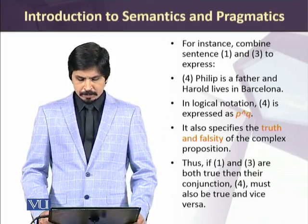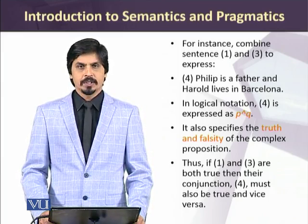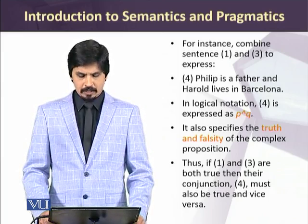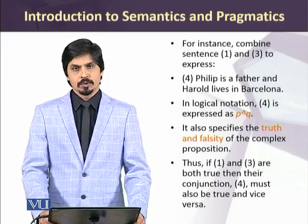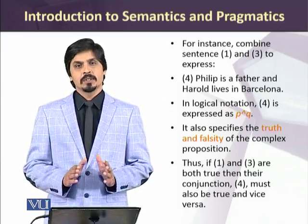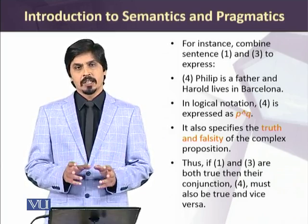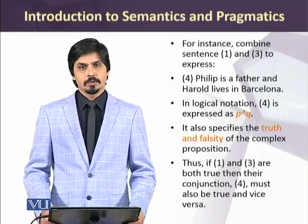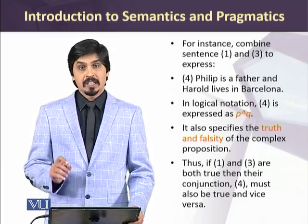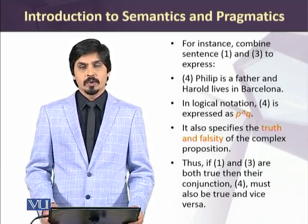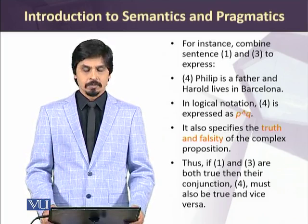For instance, if we combine sentences one and three to express 'Philip is a father and Harold lives in Barcelona,' in logical notation we would write it P and Q. It also specifies the truth and falsity of the complex proposition. Thus, if statements one and three are true, then their logical conjunction should also be true. So the combination of one and three in the form of statement four should be true if statements one and three are true.